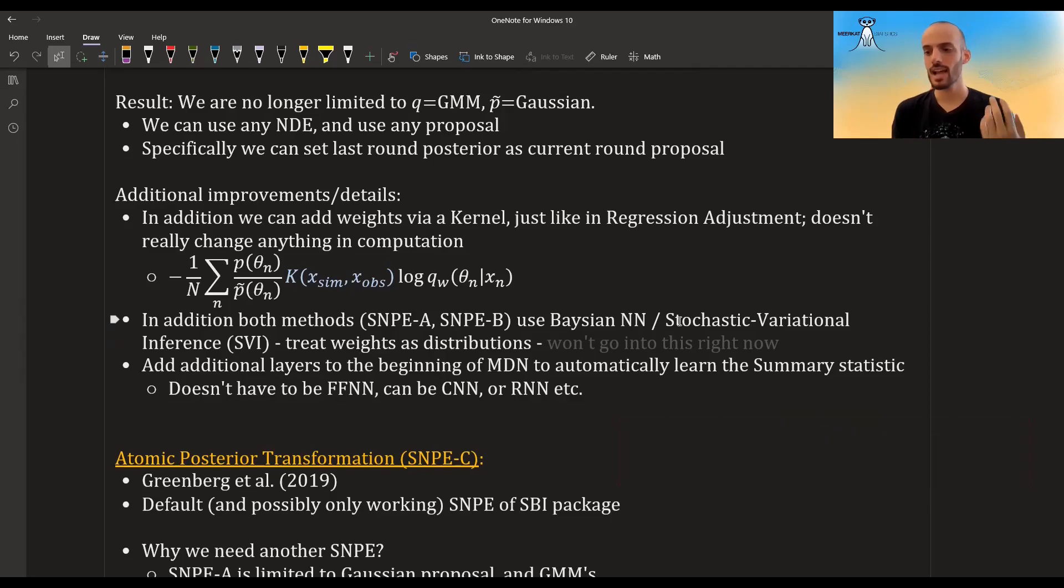There's also other cool tricks that the second paper does, specifically for the problems of neural networks, which is how to learn automatically a summary statistic. So you could add some additional layers to before the MDN neural network or any other neural density estimator network, and these layers—they don't have to be a feed-forward neural network, a dense layer, or a linear layer—they can also be a convolutional neural network or a recurrent neural network, etc.